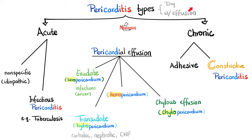As for the effusion, pericardial effusion could be bloody — hemopericardium — purulent, serous — seropericardium — watery — hydropericardium — or lymphatic — chylopericardium. It can be exudate, transudate, blood, or chyle.